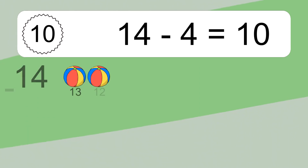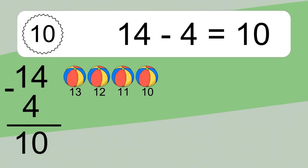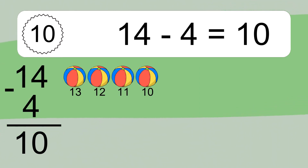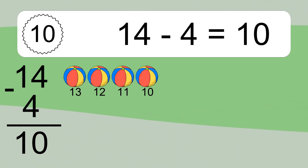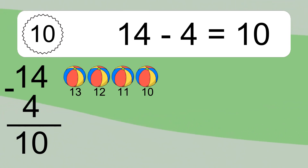14 minus 4 equals what? 14 minus 4 equals 10. Let's count it. 13, 12, 11, 10.